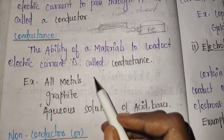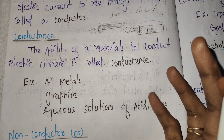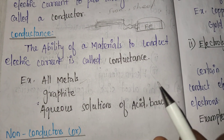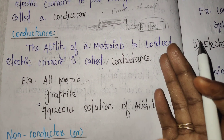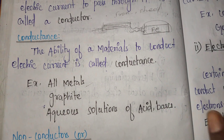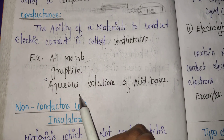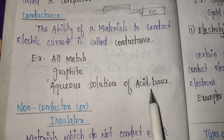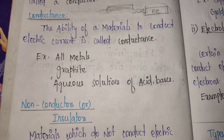All metals conduct current — that is conductance. Graphite and aqueous solutions of acids and bases also conduct current.